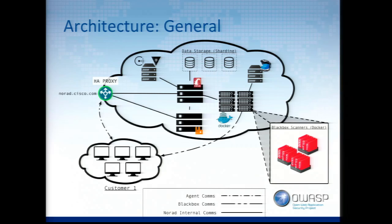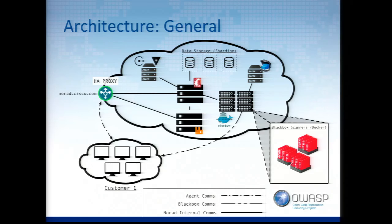Everything is fronted by HAProxy, so as a customer you only ever reach out to norad.cisco.com — no multiple endpoints to worry about. Down in the lower portion of the cloud we have RabbitMQ for our relay to send messages down. We also run our own Docker registry where all test content is stored, with plans for private registries. Everything's stored in a database. We have Consul for service discovery to scale different parts of the cloud, and Vault to store sensitive information like credentials encrypted at rest.